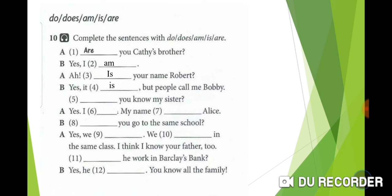Number 5: The main verb is know, and we have present simple, so we need a helping verb—either do or does. We have the pronoun you, so we use do. Do you know my sister? Yes, I do. My name is Alice.